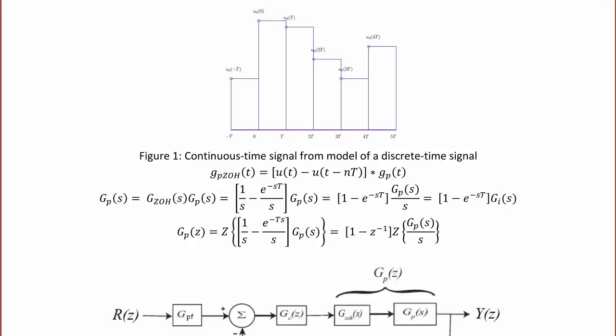Now we take the Z-transform of this S-domain function, and we get GP(z) equal to the Z-transform of (1/s − e^(−T)/s) · GP(s), or (1 − z^(−1)) — which is a delay, which makes sense since we're doing a zero-order hold — times the Z-transform of GP(s)/s.